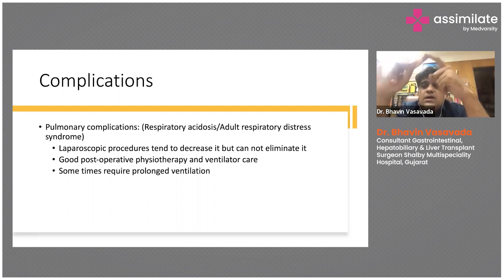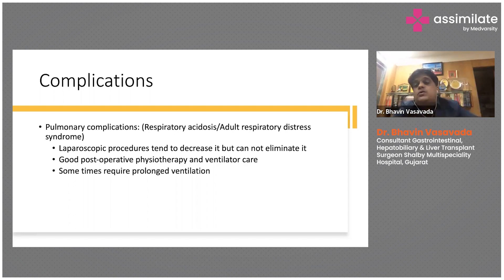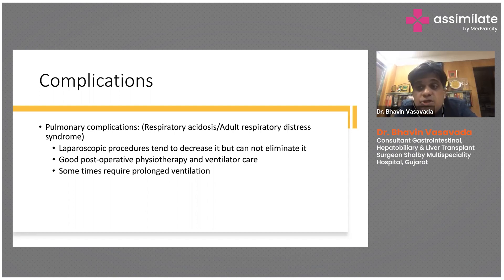The most common type of pulmonary complication is type 2 respiratory failure — respiratory acidosis — where, due to restricted chest capacity, the patient is not able to expire properly and CO2 is retained in the blood. Then there are chances of postoperative pneumonia; with prolonged ventilation there are chances of ventilator-associated pneumonia. Lung collapse is also very common and is part of the described complications.